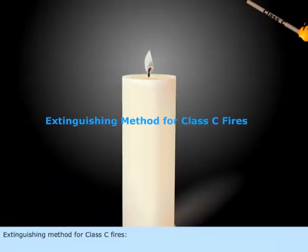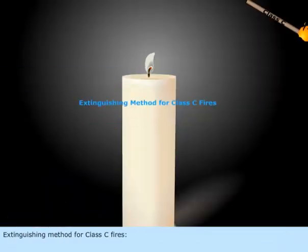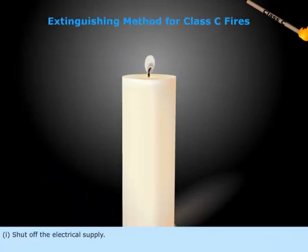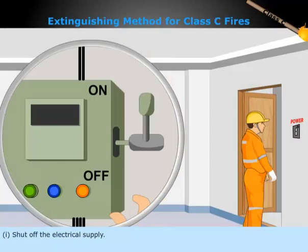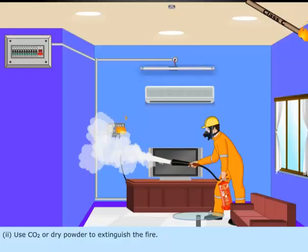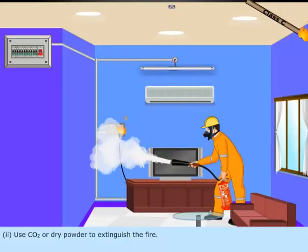Extinguishing method for Class C fires: 1. Shut off the electrical supply. 2. Use CO2 or dry powder to extinguish the fire.